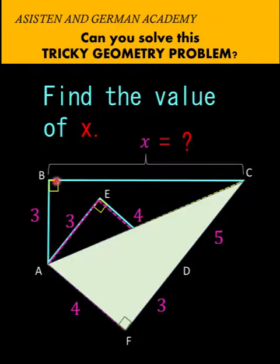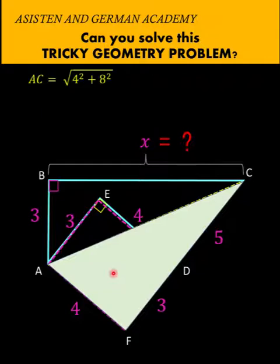This leg is 3 units, so we can compute again side BC using another application of Pythagorean formula. So let's compute first the length of side AC. So AC is equal to the square root of the sum of 4 squared and 8 squared for this side FC. Simplifying this gives us square root of 80.